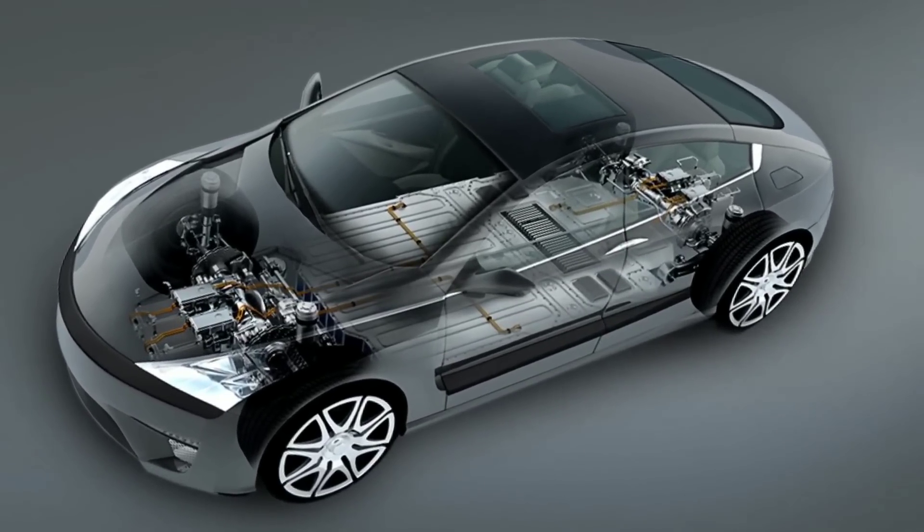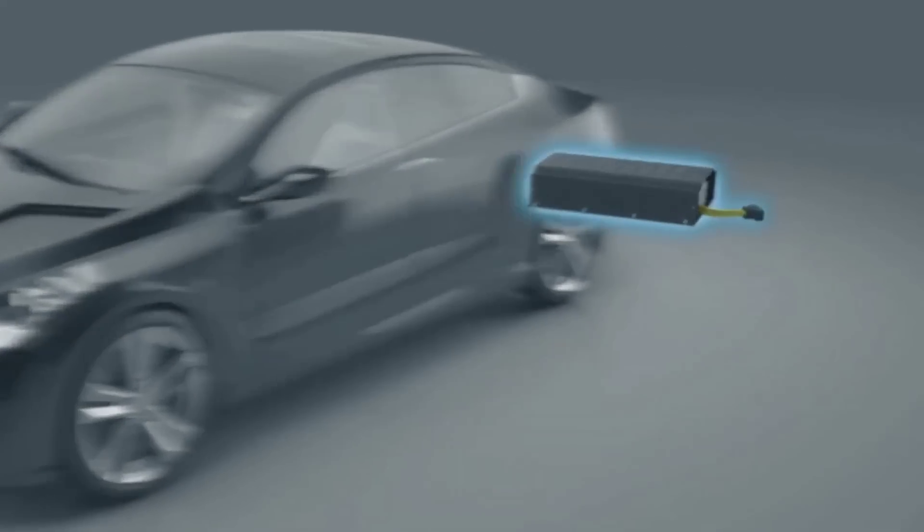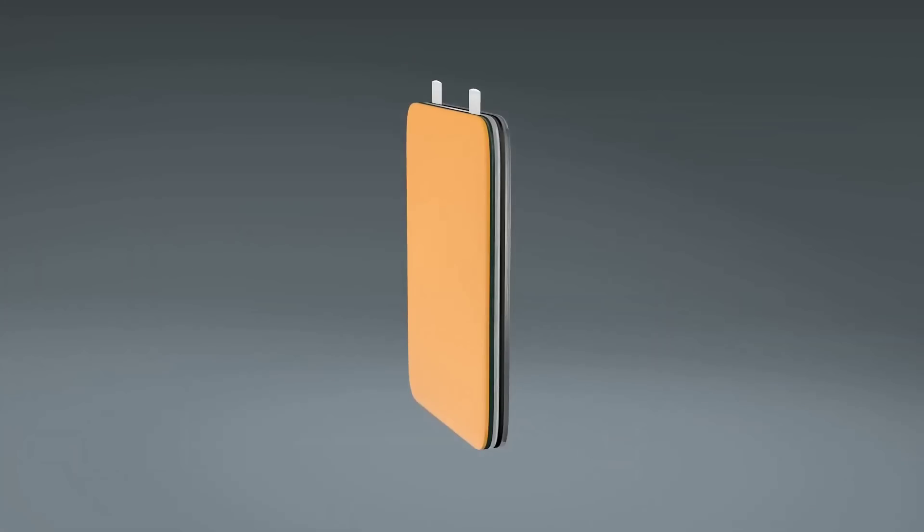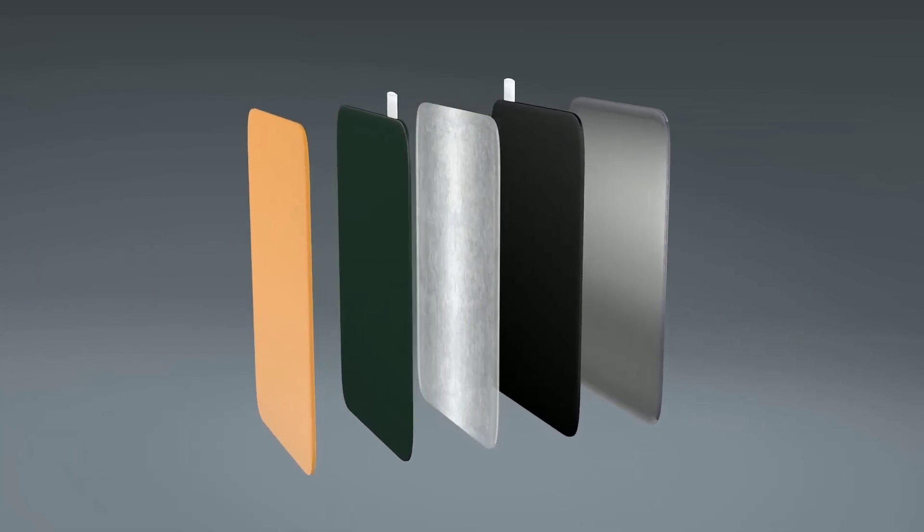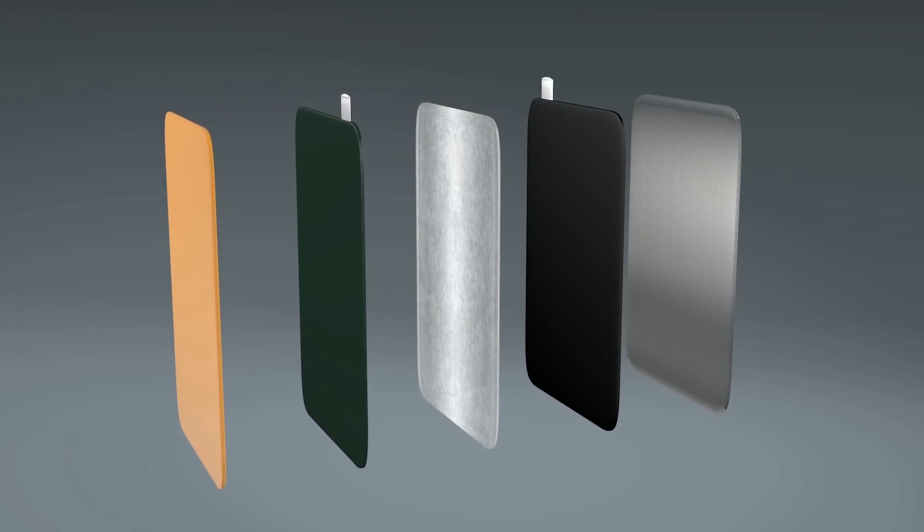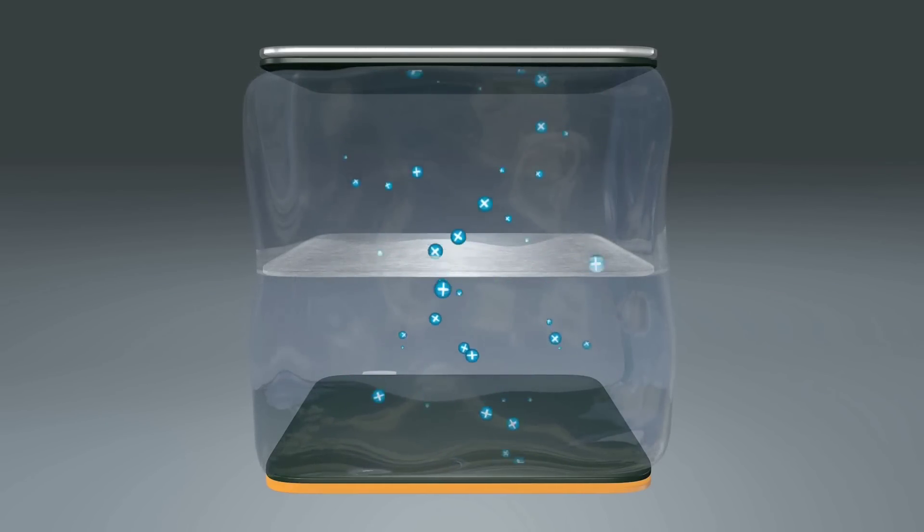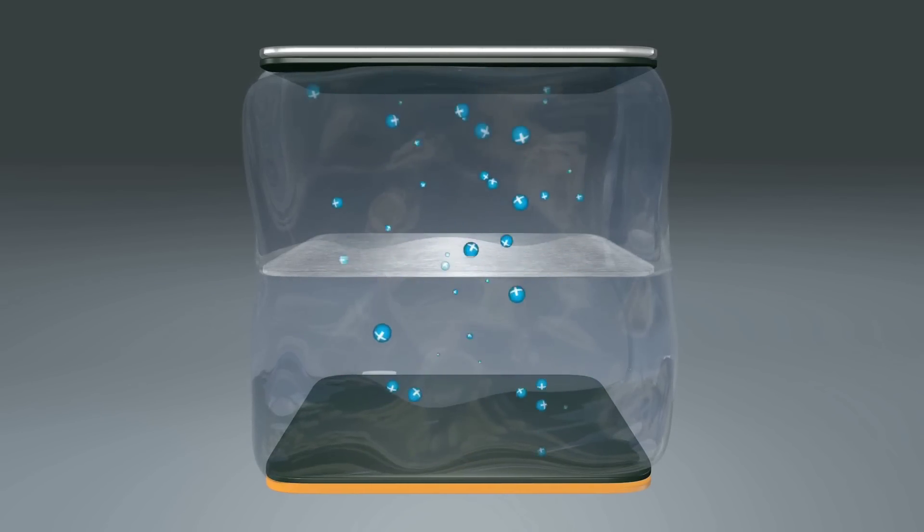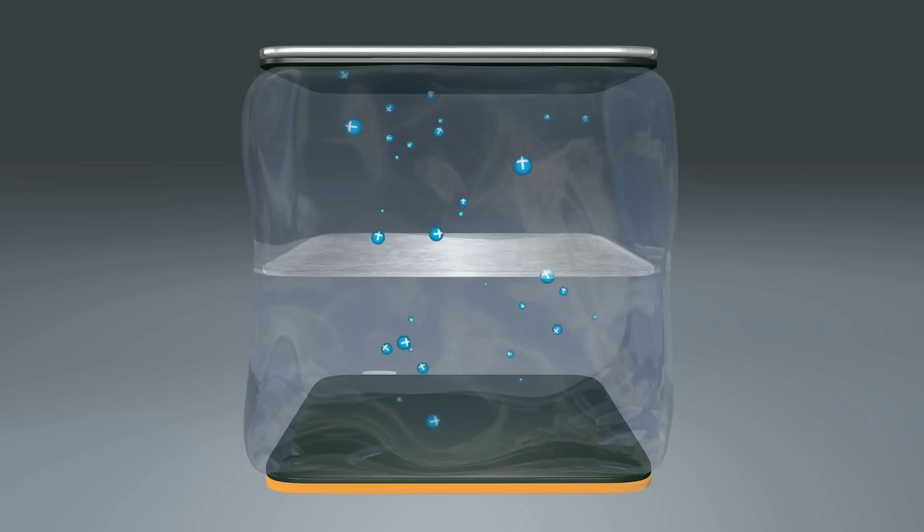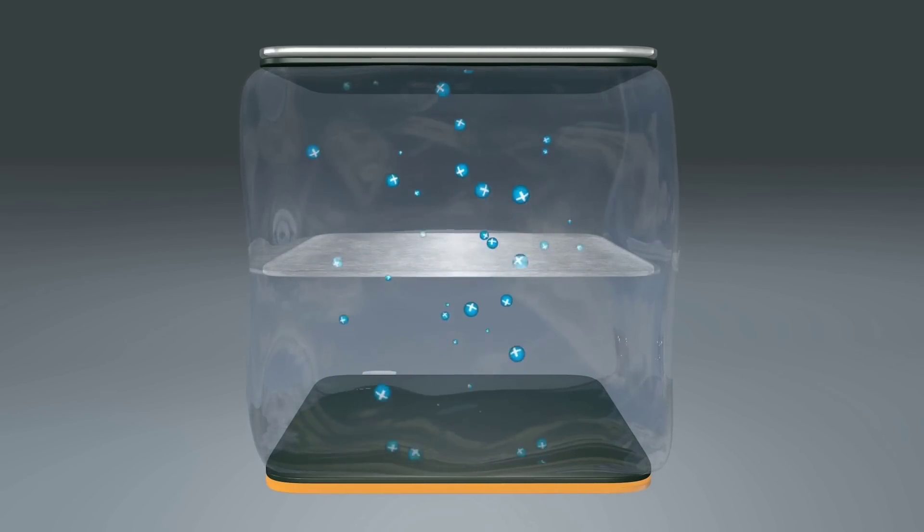In a lithium-ion battery, the anode is made of graphite, the cathode is made of a metal oxide, and the electrolyte is a liquid solution that contains lithium-ions. When the battery is connected to a circuit, the lithium-ions move from the anode to the cathode through the electrolyte, generating electricity. When the battery is charged, the opposite happens. The lithium-ions move from the cathode to the anode through the electrolyte.